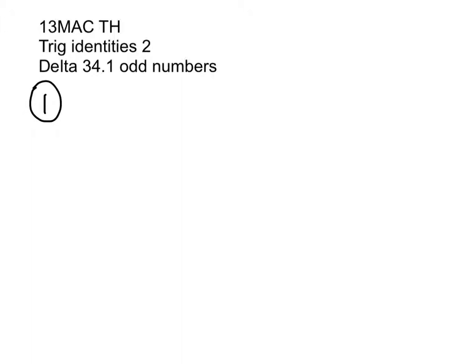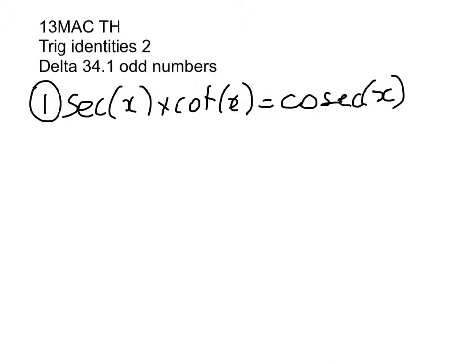So first we state what we're required to prove. So sec(x) times cot(x) is equal to cosec(x). Right, so we start with the left hand side and we manipulate that.